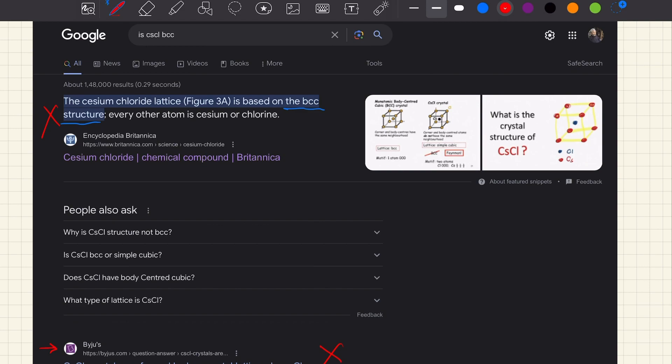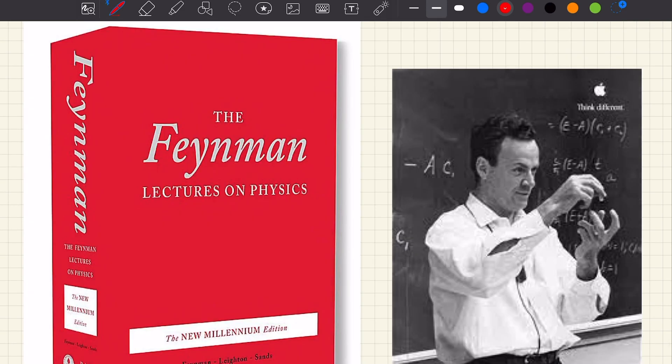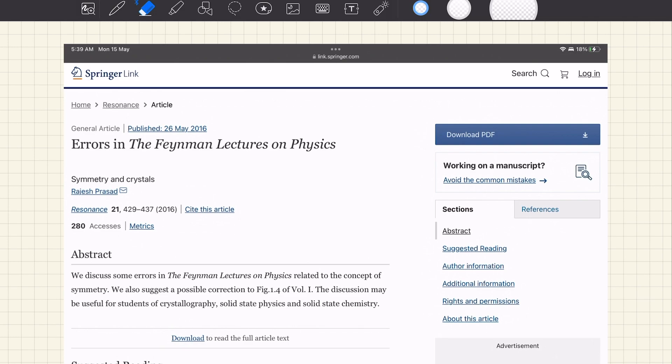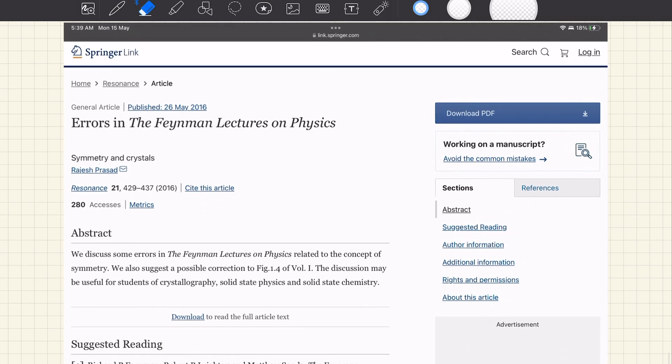And in fact Nobel laureate Feynman, having written the Feynman Lectures on Physics, a very famous and popular book, but in this book also this mistake is present. This distinction, that the body center and corner should have the same atom if it is body centered cubic, is not there in this book. I have an article published which is freely available on the web.